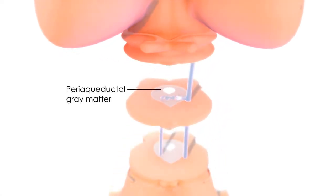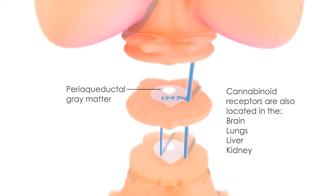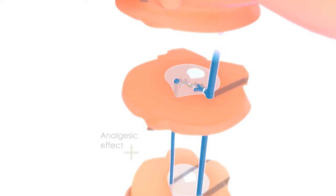The ascending pathway also relays to the periaqueductal gray matter, an important part of the descending pain modulating system, where specific cannabinoid receptors are located. Stimulation of the periaqueductal gray is known to produce an analgesic effect.